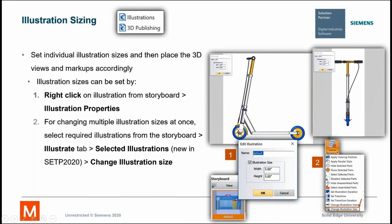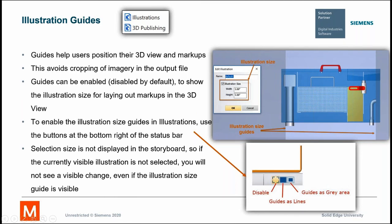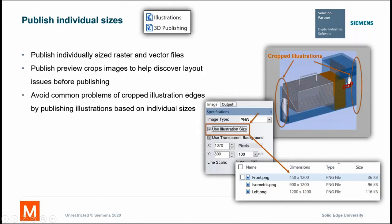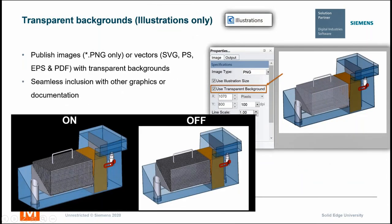There are some illustration guides — background guides that allow you to see before you publish what is going to show up in your published document. You also get this outline in the back that shows you just what's going to be on your document. There's also a preview for individual sizes to let you see if any images are cropped prior to publishing your output. You can have transparent backgrounds in illustrations — just the outline of your model in your image, removing the background color so you can put these graphics into any other forms of documents.